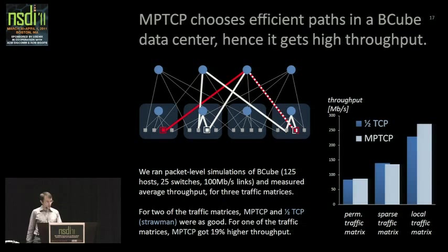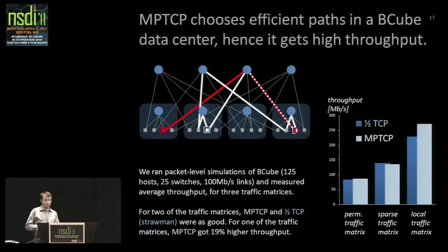Here are simulation results from a packet-level simulation of MPTCP, comparing it to the straw-man solution which balances traffic evenly. This bar chart shows the throughput an average flow gets. We've run three separate traffic matrices. In the first two traffic matrices, evenly-weighted TCP and MPTCP are both equally good. In our third case, we have a 19% improvement over naive traffic splitting.